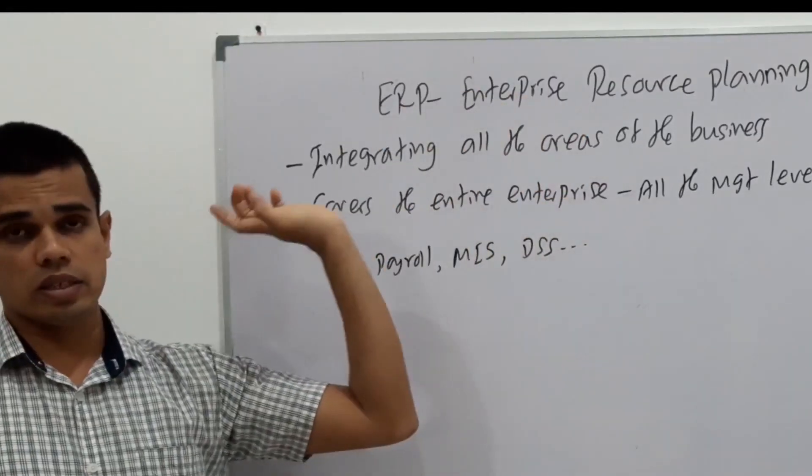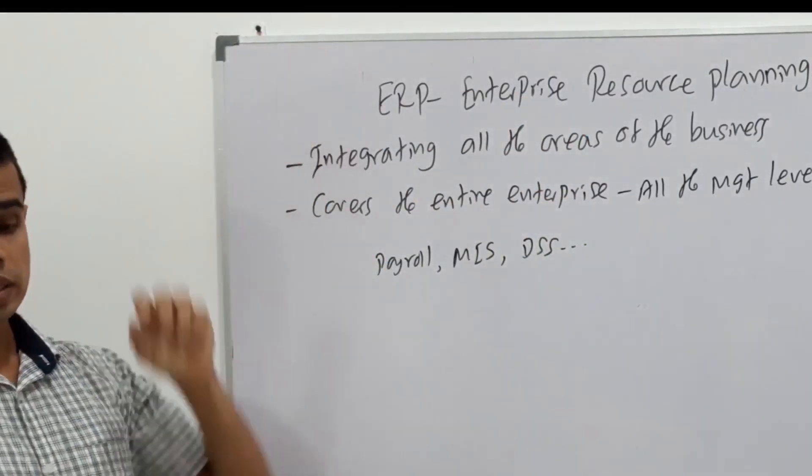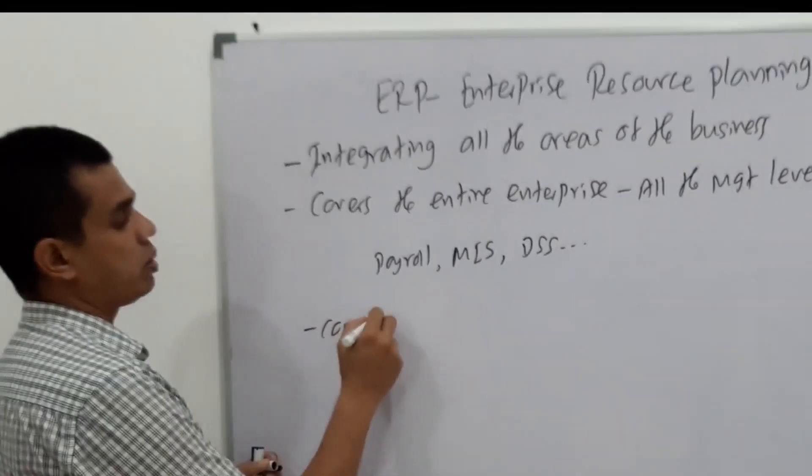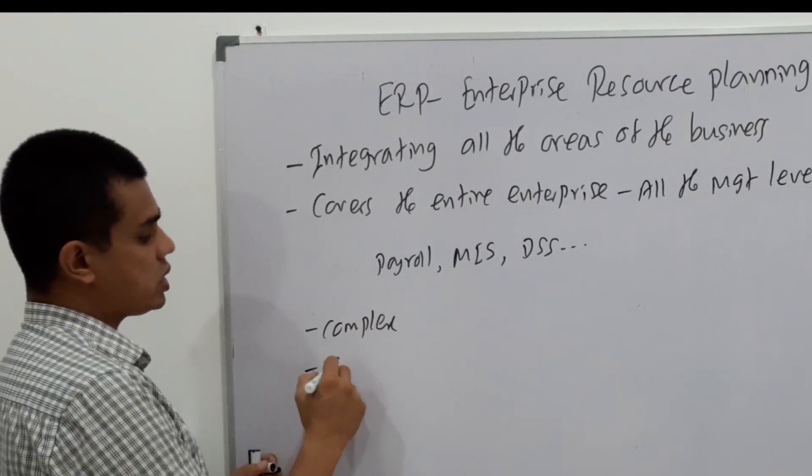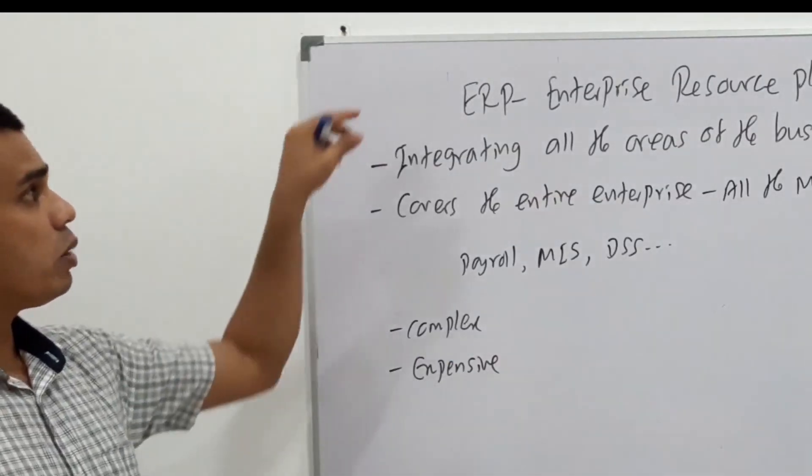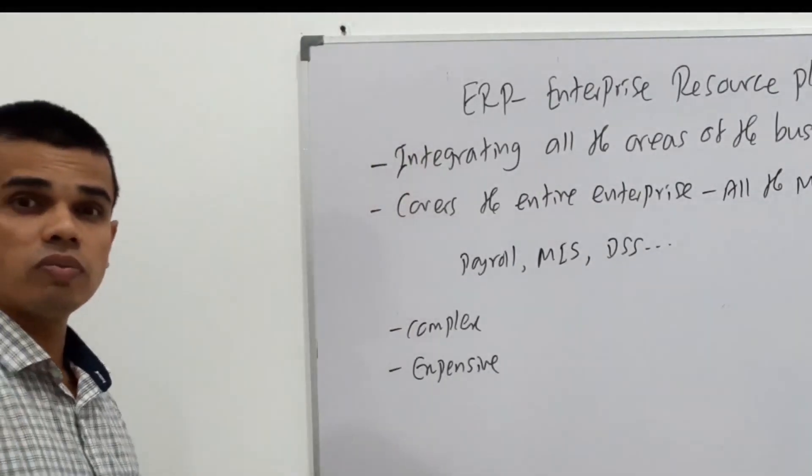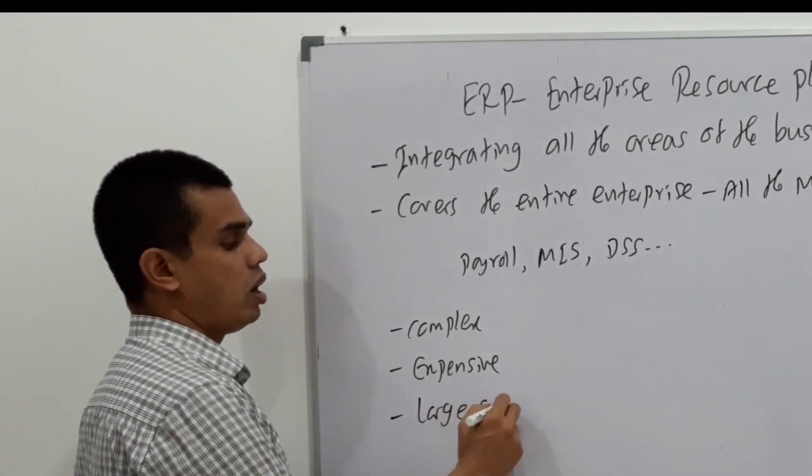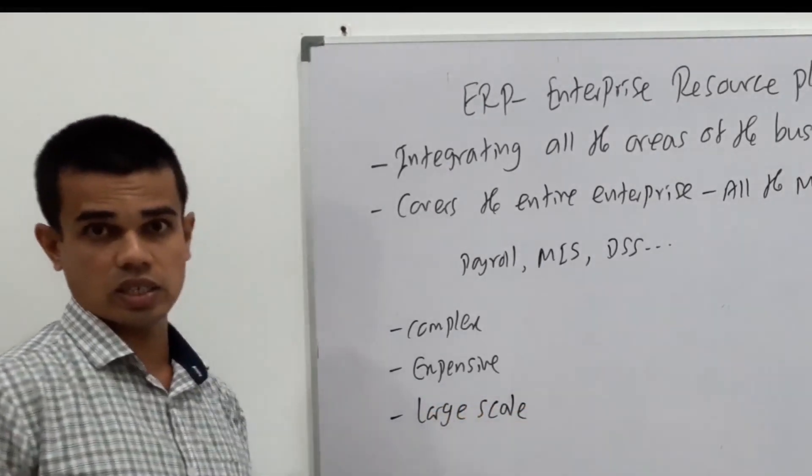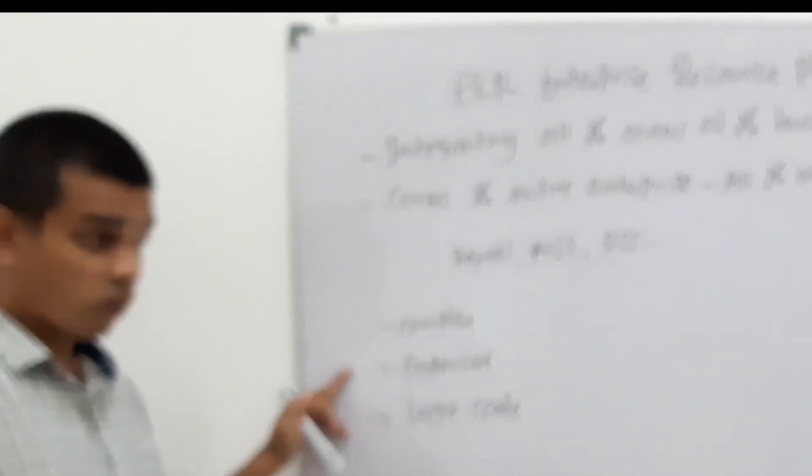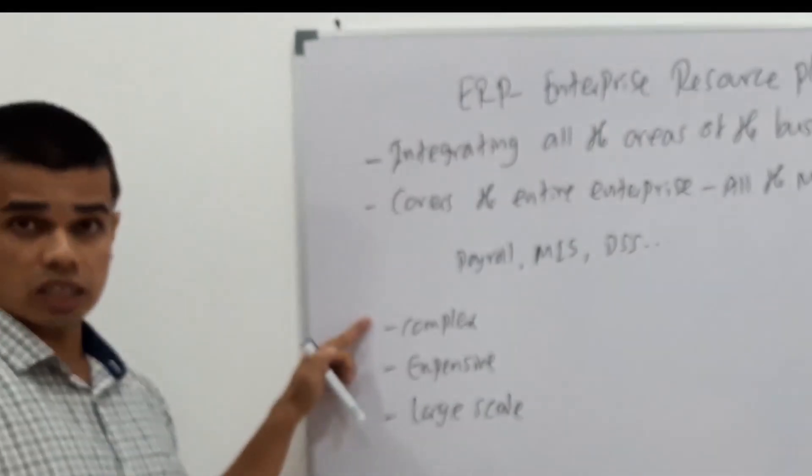The next system is ERP, Enterprise Resource Planning System. This is said to be a highly complex product. It's very complex. And also this is very expensive for the organization to purchase. ERP solutions are not suitable for small scale organizations. They are suitable for large scale organizations. Why? It's that complex and expensive.